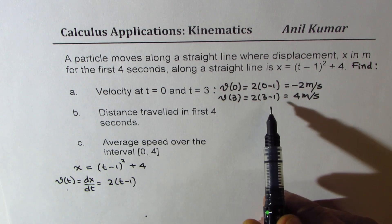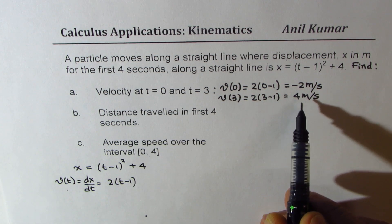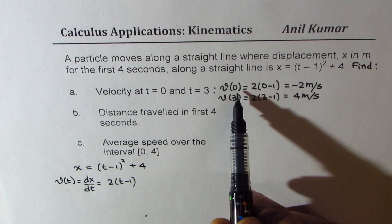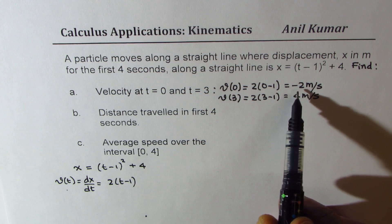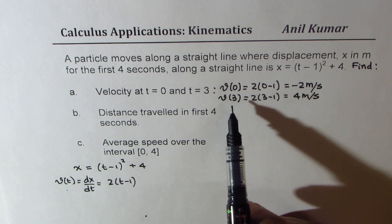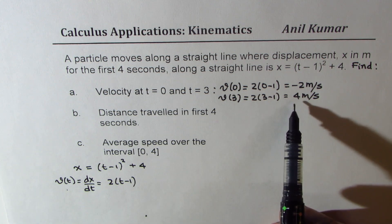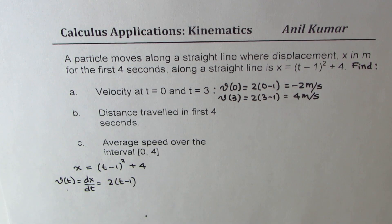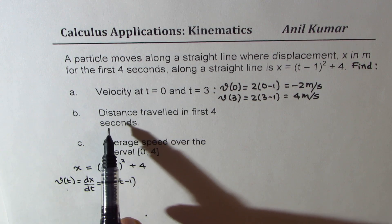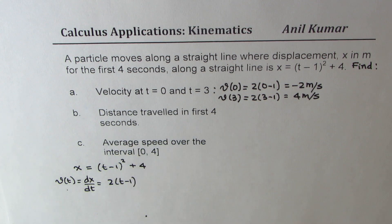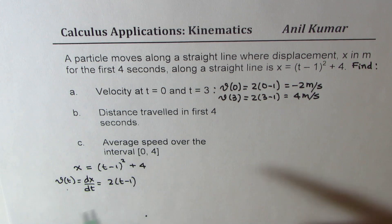These two velocities indicate a change in direction. Initially the particle is moving towards the reference object, and at t equals 3 the particle is moving away from the object. Part B asks for the distance travelled in the first 4 seconds — this is a very interesting part.